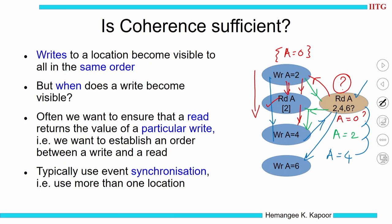We have these different values and they are perfectly alright when we consider write serialization, because the variable is getting the correct value according to the interleaving sequence. But if I want to control what value the yellow read should get — if I want to enforce that it always gets 4 — then I need to do something more which coherence does not give me. The type of interleaving which takes place will determine the values of reads, and if I want to enforce a particular value, I need to establish an order.